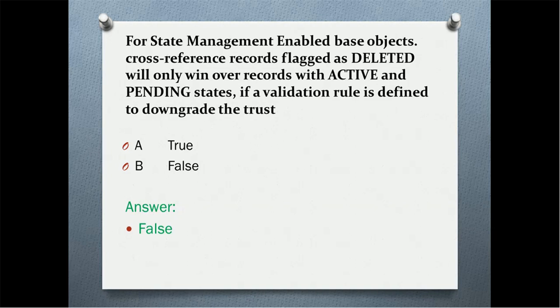To elaborate: if active, pending, and deleted records are all present, the active record wins. If only pending and deleted are present, the pending record wins. Only if there is solely a deleted record will it be reflected in the base object. We cannot win a deleted record over active or pending even using validation rules to downgrade trust. So the correct answer is false.